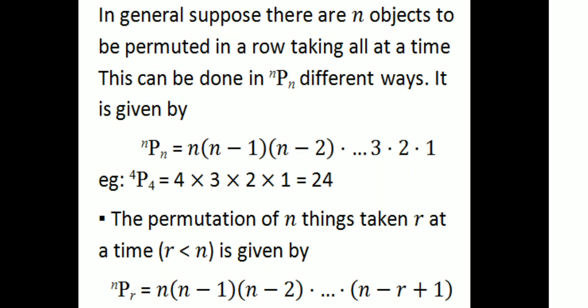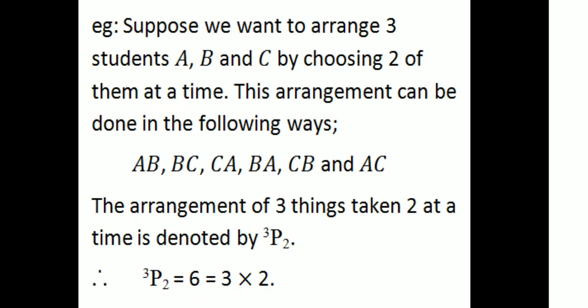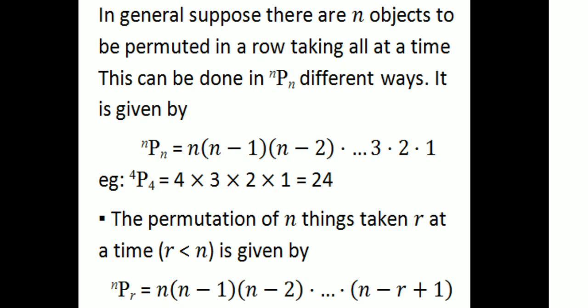In general, suppose there are n objects to be permuted in a row taking all at a time. This can be done in nPn ways. nPn is given by n into (n−1) into (n−2) into ... into 3 into 2 into 1. That is equal to 24 for n=4.